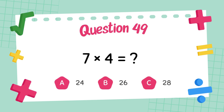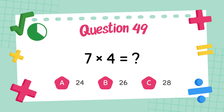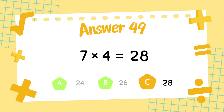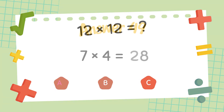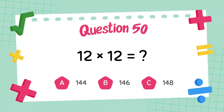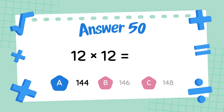What is 7 times 4? What is 6 times 4? The answer is 28.